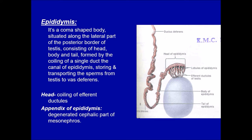To reiterate: spermiogenesis (final maturation of sperms) takes place in the epididymis, but actual motility is gained in the uterus by a method called capacitation. Spermiogenesis takes place in the epididymis and capacitation takes place once the sperms are released into the uterus.